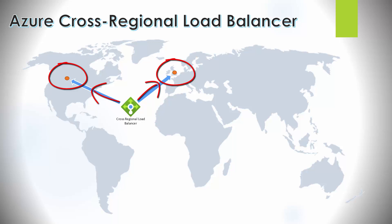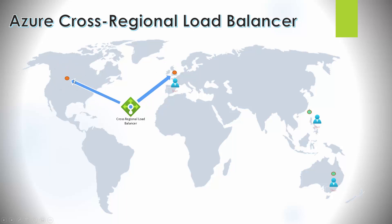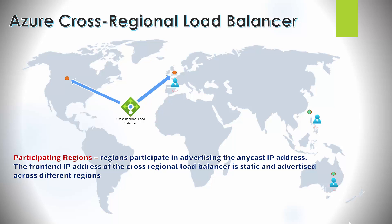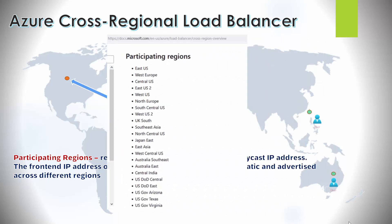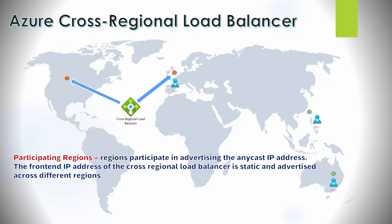It's a load balancer for services within multiple regions, but there are a few things to understand about how it works under the hood. The load balancer has a front-end IP address accessible to users. The IP address of the cross-region load balancer is advertised by all participating regions. A participating region is any region that advertises the IP address, and this is key to understanding how routing works.